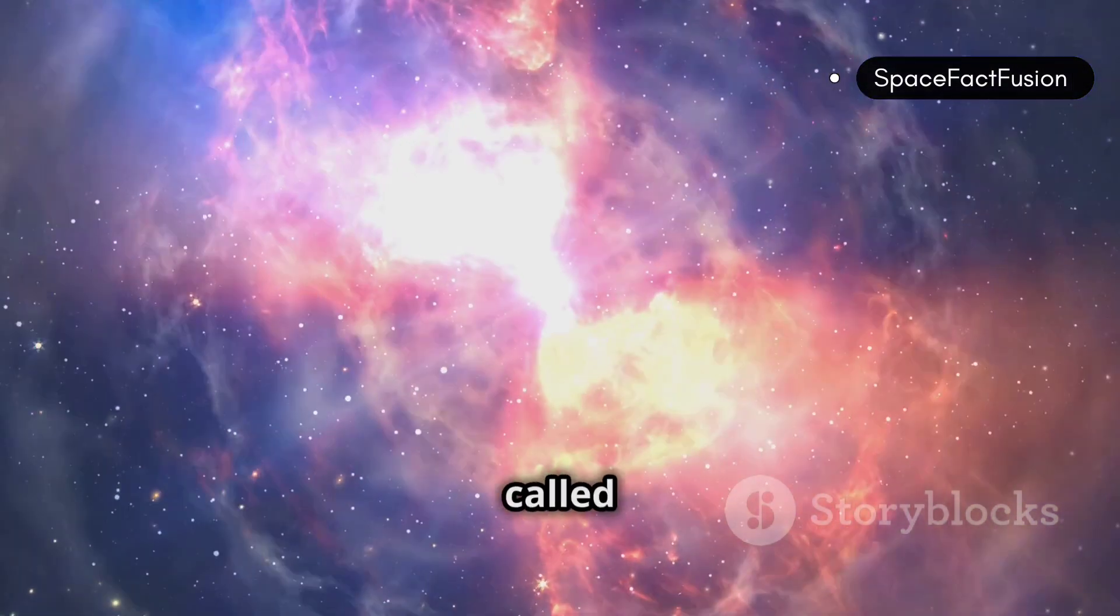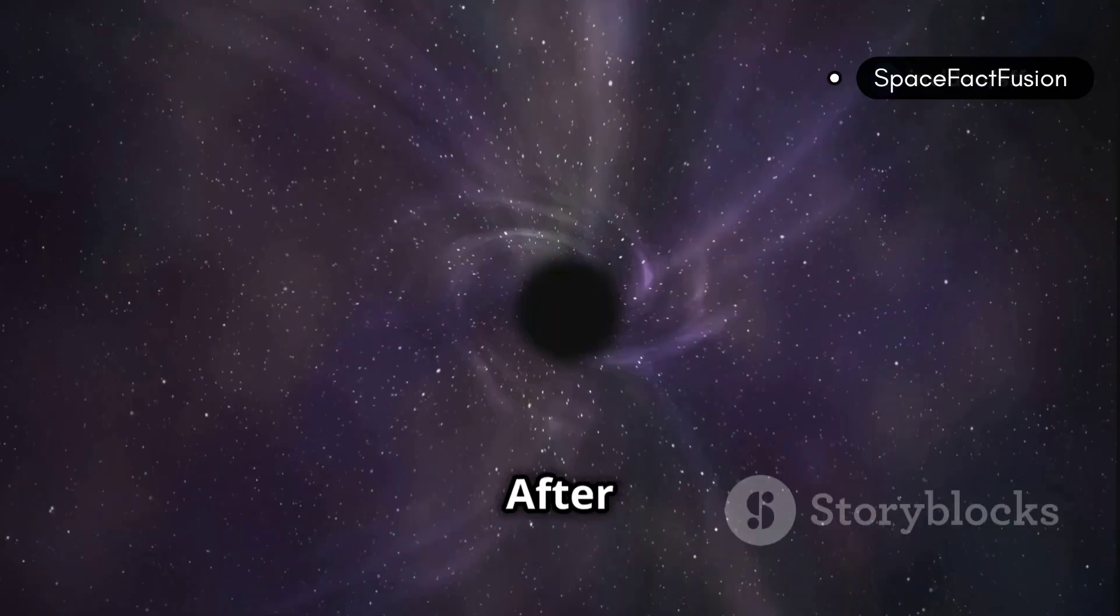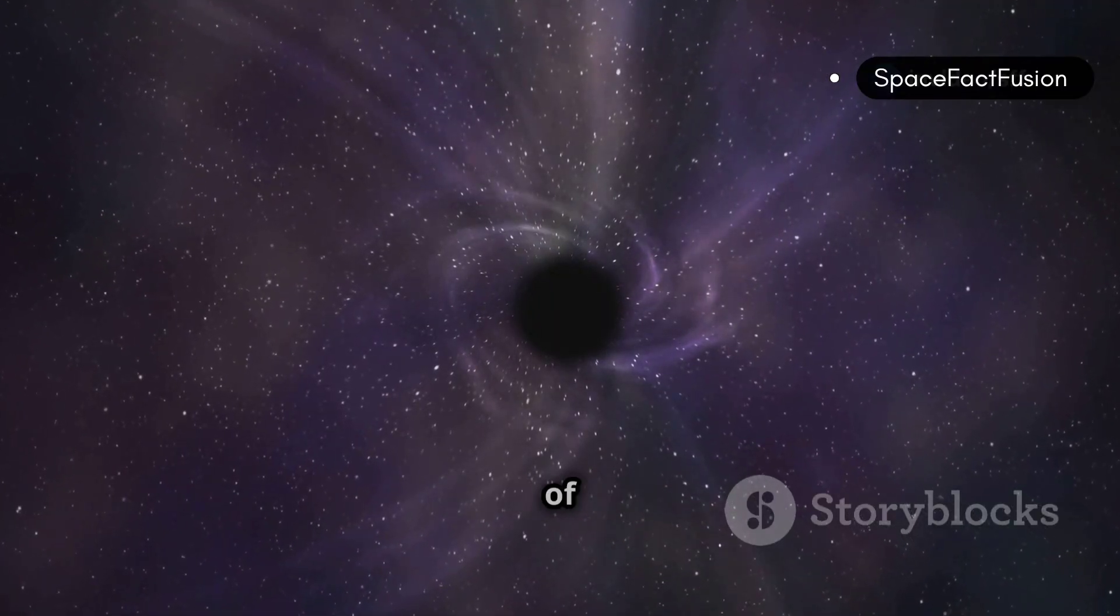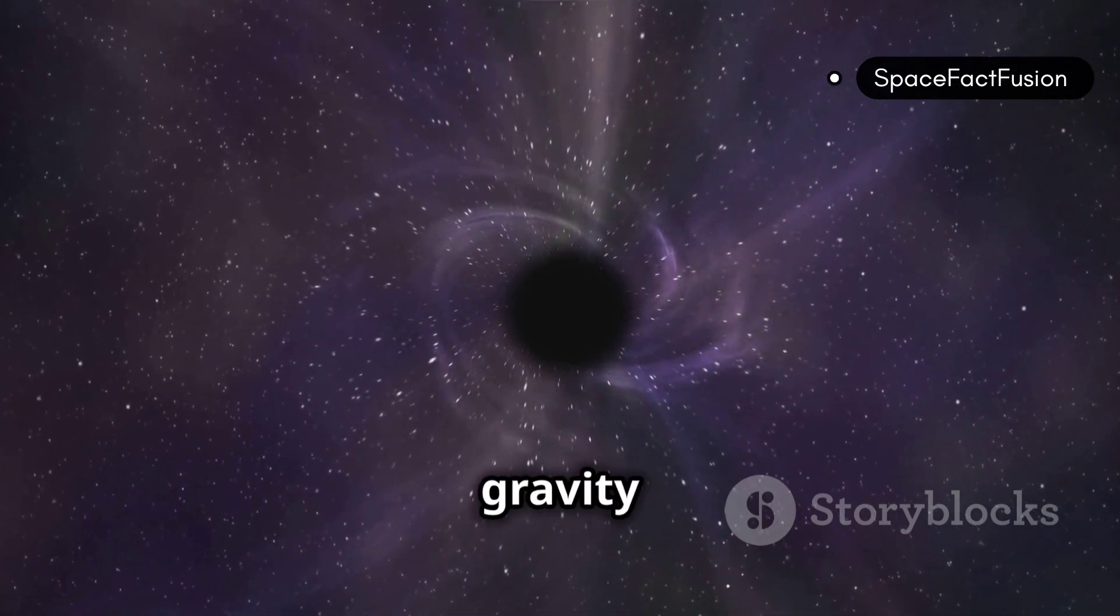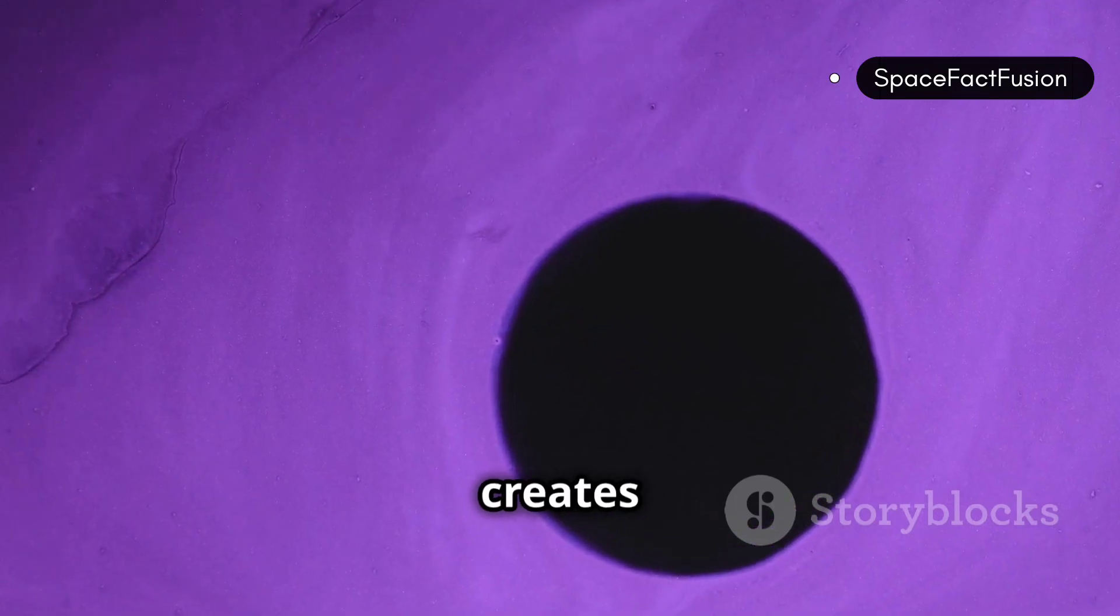This process is so violent that it is called a supernova explosion. After a supernova explosion, the core of the star collapses and turns into an incredibly dense object. This object is so dense that its gravity becomes very strong. This creates a black hole.